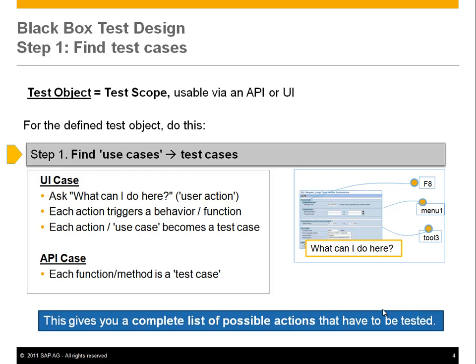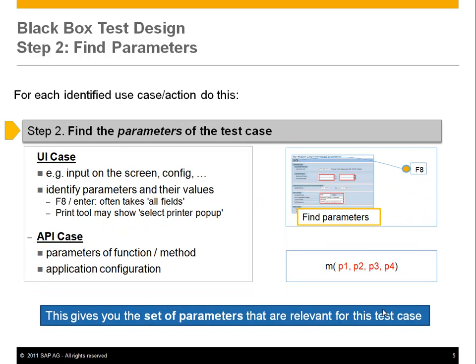For each one of those actions you move to step two: find the parameters. For a UI case, if you hit some action — like the big 'do it' button F8 in SAP transactions — you look at the screen, configuration, and other things, and you find the data that goes into the code: the parameters and their possible values. In an API it's easier because you see it right in the code: a method with certain parameters and associated value possibilities. There is also application configuration. This gives you a set of parameters that are relevant for each test case.